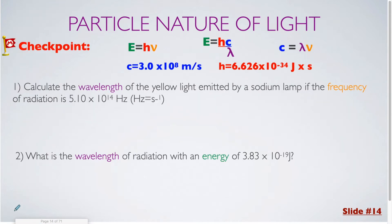For the next few slides, we are going to be completing checkpoint calculations using these three equations. Please write all of these solutions within your notebook. For number one, we are calculating the wavelength of yellow light emitted by a sodium lamp if the frequency is 5.10 times 10 to the 14th hertz.